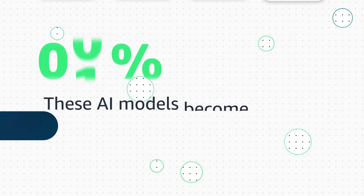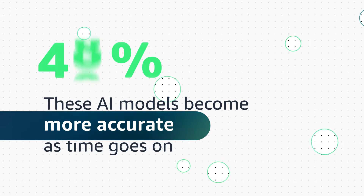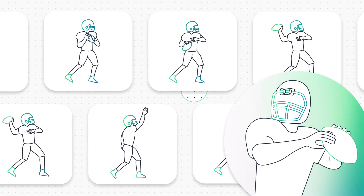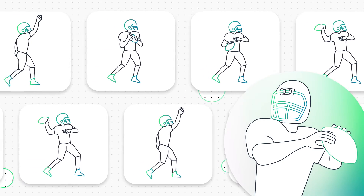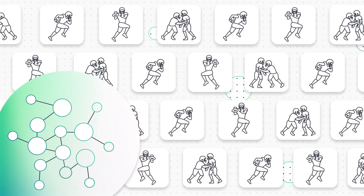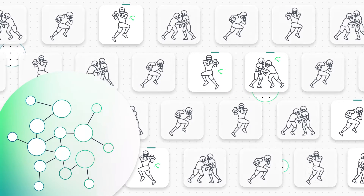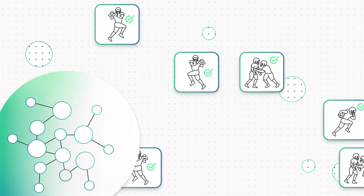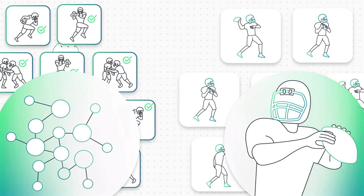Through continual iteration, these AI models become more accurate as time goes on. Just as a quarterback does countless reps that generate gradual improvements to their technique, an AI model can input increasingly more video footage and data and tweak its parameters to generate better insights. In both cases, practice and repetition are key.